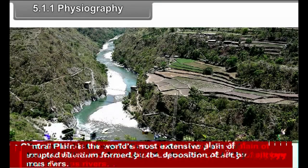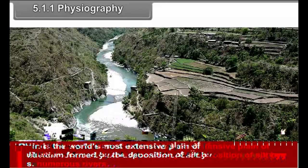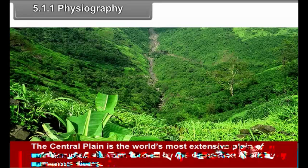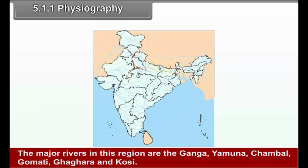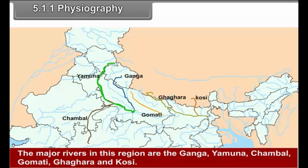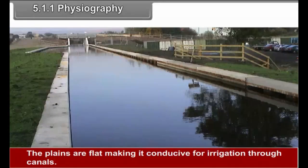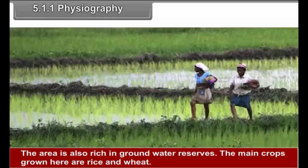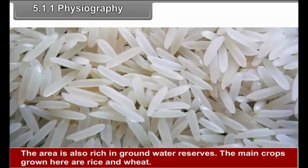5.1.1 Physiography. The central plain is the world's most extensive plain of uninterrupted alluvium formed by the deposition of silt by numerous rivers. The major rivers in this region are the Ganga, Yamuna, Chambal, Gomati, Ghagra and Kosi. The plains are flat making it conducive for irrigation through canals. The area is also rich in groundwater reserves. The main crops grown here are rice and wheat.